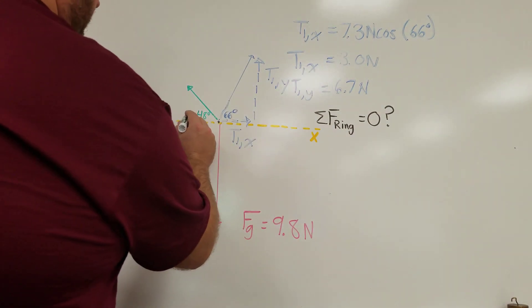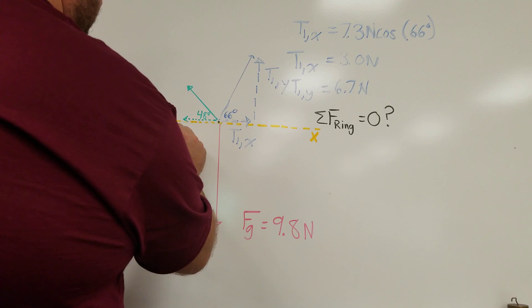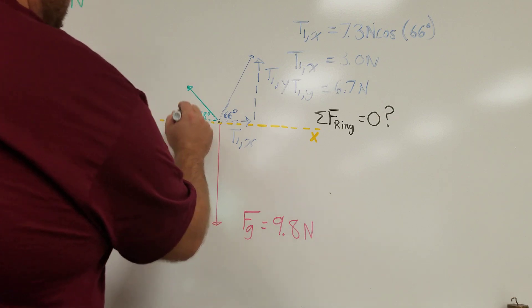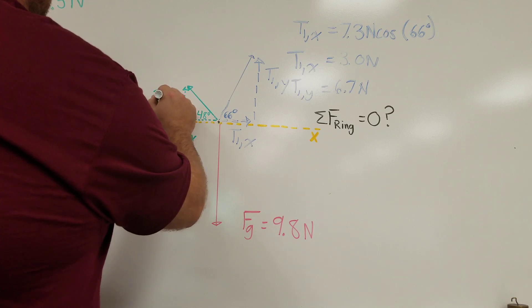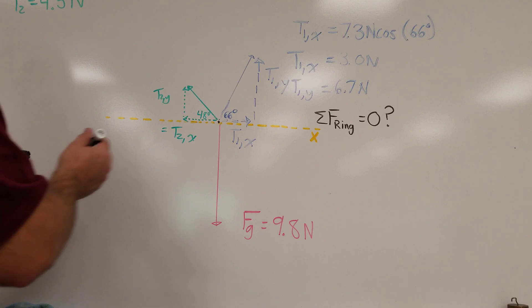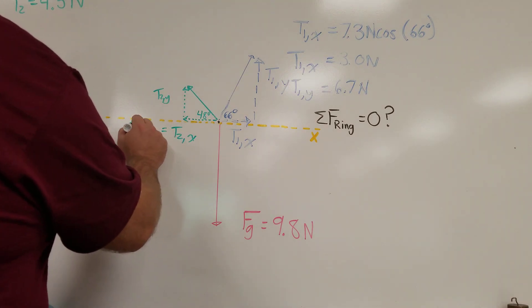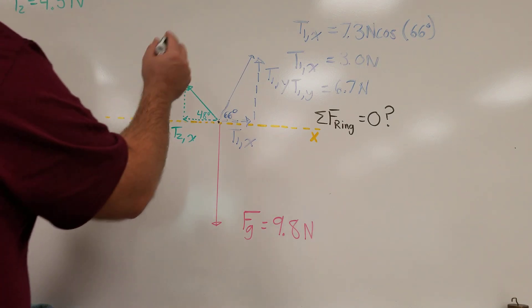If I do the same thing with the green vector, so I can draw T2,X and T2,Y, and I can do some trigonometry to figure out how big both of those numbers are. So like 4.5 cosine 48 gives me 3 Newtons again. And then 4.5 times the sine of 48 gives me 3.3.